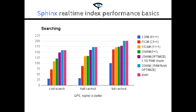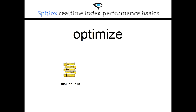Eliminating the I/O problem isn't everything, because Searchd still needs to go through several chunks and merge the results. CPU can also be a bottleneck. So, real-time indexes lag behind the search speed of a plain index, which consists of a single piece. To bring real-time index performance close to plain index performance, we need to optimize.